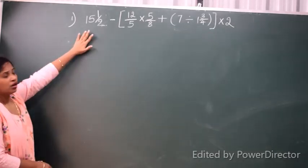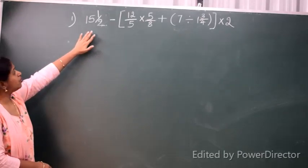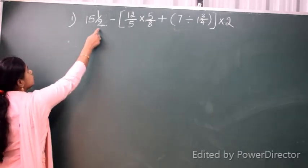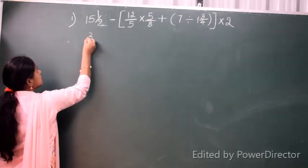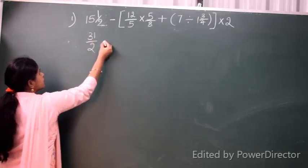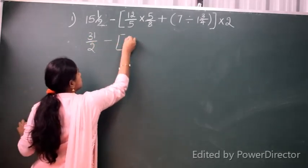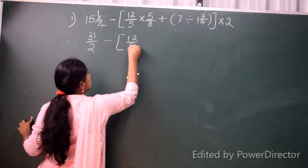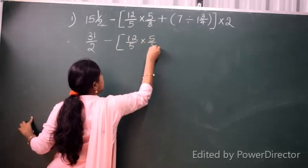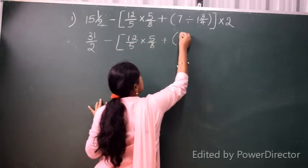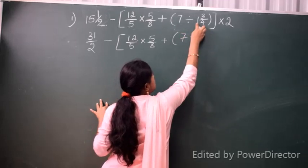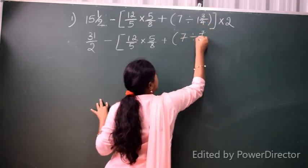So first, I will convert the mixed fractions. Two times 15 equals 30, plus 1 equals 31/2. And for 1¾, 4 plus 3 equals 7, so it becomes 7/4.